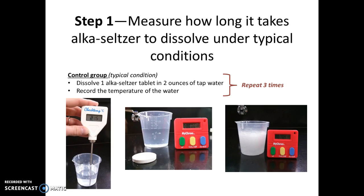You might decide the endpoint is when you see no solid left in the solution or when it stops bubbling. It can be hard to tell because the solution gets cloudy when it's bubbling, so just do your best and try to be consistent from one trial to the next. For this reason, I suggest that you repeat your control group three times and take the average of those three trials.